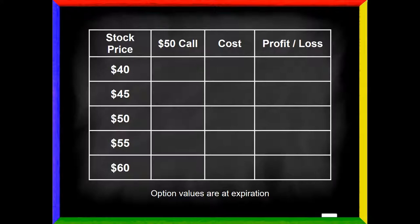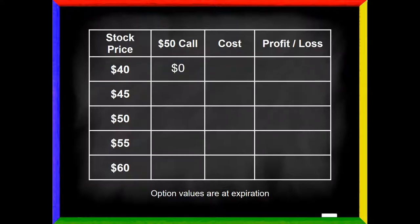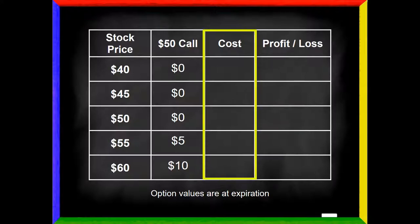If the stock is 40 at expiration, the $50 call is obviously worthless — nobody will pay for the right to pay 50 when the stock trades at 40. If the stock is 45, the call is worthless. At 50, the call is worthless. At 55, the $50 call has $5 of intrinsic value and no extrinsic value, so it trades for exactly $5. If the stock reaches 60, the 50 call is worth $10. The cost column is simply what you paid — in this example $4 — and that doesn't change with the stock price. Once you paid $4 for this option, that entire column is fours.